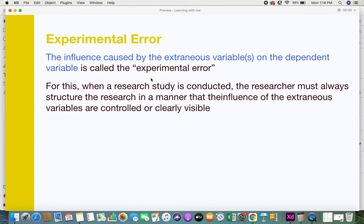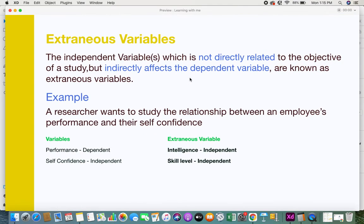When a research study is conducted, the researcher must always structure the research in a manner that the influence of the extraneous variables are controlled or clearly visible. You need to identify what could be the possible extraneous variables that will affect your study. If those are not taken into account, there will definitely be an experimental error because, indirectly in this example, you're saying that only self-confidence contributes to an employee's performance.